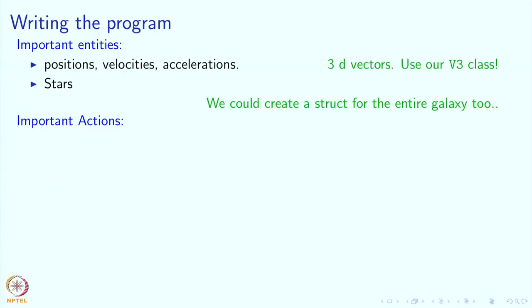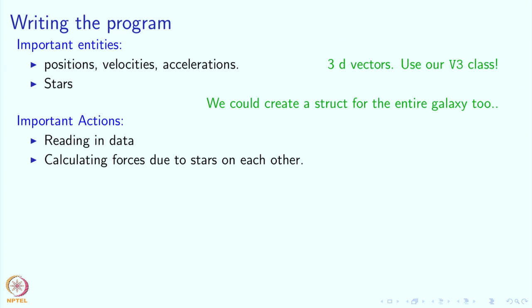What we have said so far is that the entities, the physical entities, are the stars, and inside the stars we will have V3 entities which will represent the positions, velocities, and accelerations of the stars. What are the important actions that the program needs to take? Well, first of all, the program has to read in data. Then it has to calculate the force due to stars on each other — this will involve all stars. Then it has to update the position.